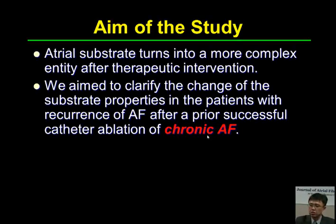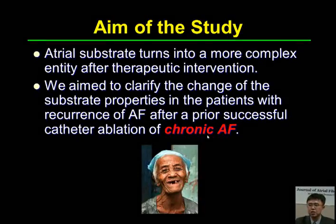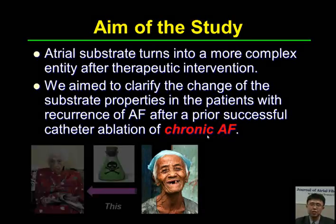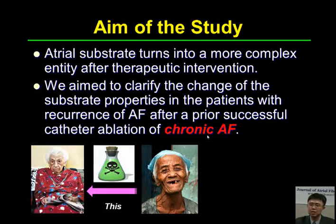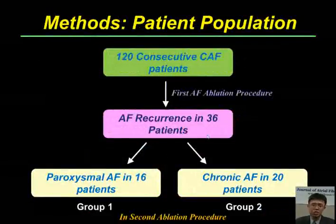The atrial substrate turns into a more complex entity after therapeutic interventions. How about patients with chronic atrial fibrillation after ablation? In this study, we aim to clarify the change of substrate properties in patients with recurrent atrial fibrillation after successful catheter ablation of chronic atrial fibrillation — whether the substrate becomes worse or better.